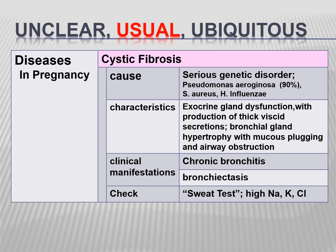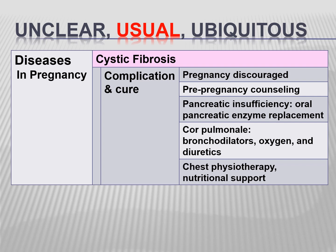Cystic fibrosis is a serious genetic disorder caused by Pseudomonas aeruginosa, Staphylococcus, or Haemophilus influenzae. Characteristics include exocrine gland dysfunction with thick viscid secretions, bronchial gland hypertrophy with mucous plugging and airway obstruction. Manifestations include chronic bronchitis and bronchiectasis. Check for high sodium, potassium, and chloride. Genetic counseling is advised. Pancreatic insufficiency management is needed. Anticipate cor pulmonale; give bronchodilators, oxygen, and diuretics, and perform chest physiotherapy and nutritional support.